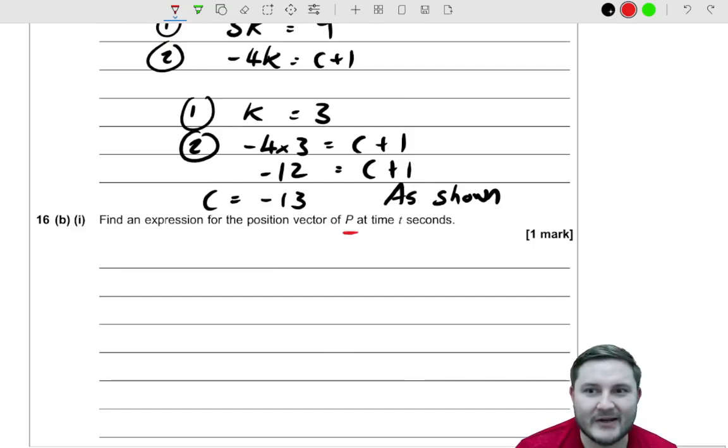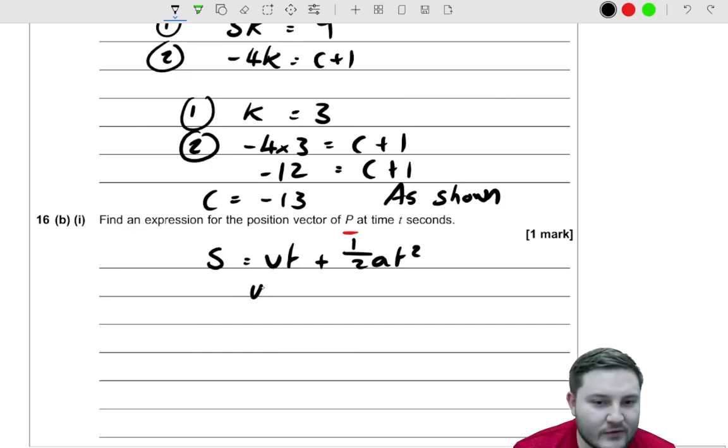We can use S equals UT plus a half AT squared to actually get an expression in T. The reason why we can use this is because it's at rest initially. So U is equal to zero. So this part is going to cancel. So all we're going to be left with is S equals a half AT squared.